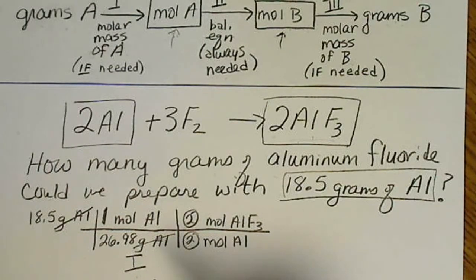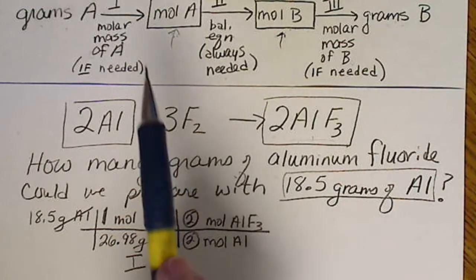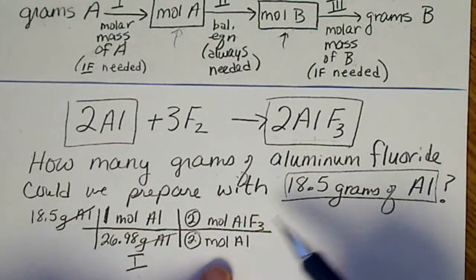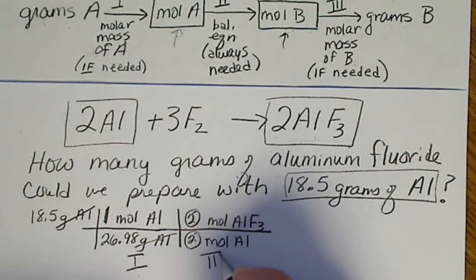And then we went to step two to convert moles of aluminum to moles of aluminum fluoride. So here's where we change formulas. So again, this is the recipe ratio.